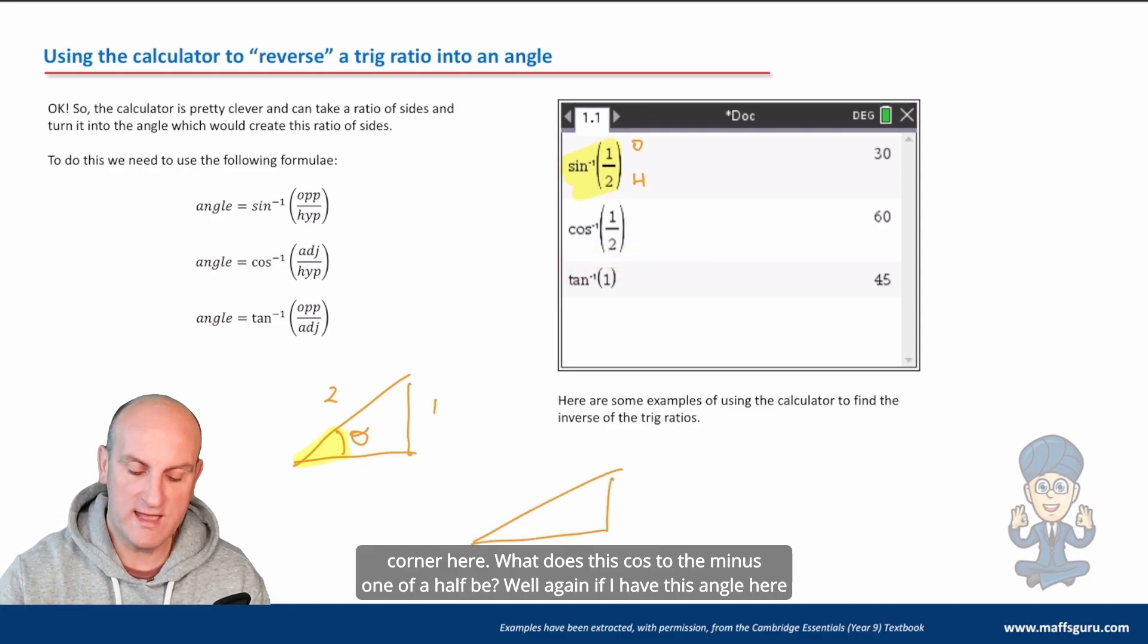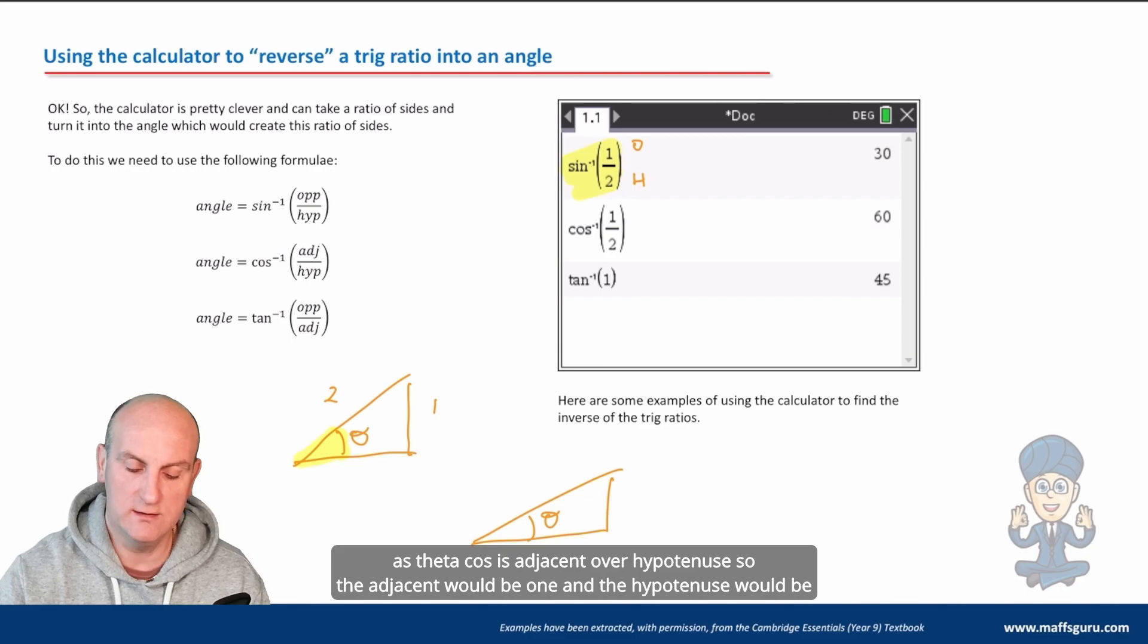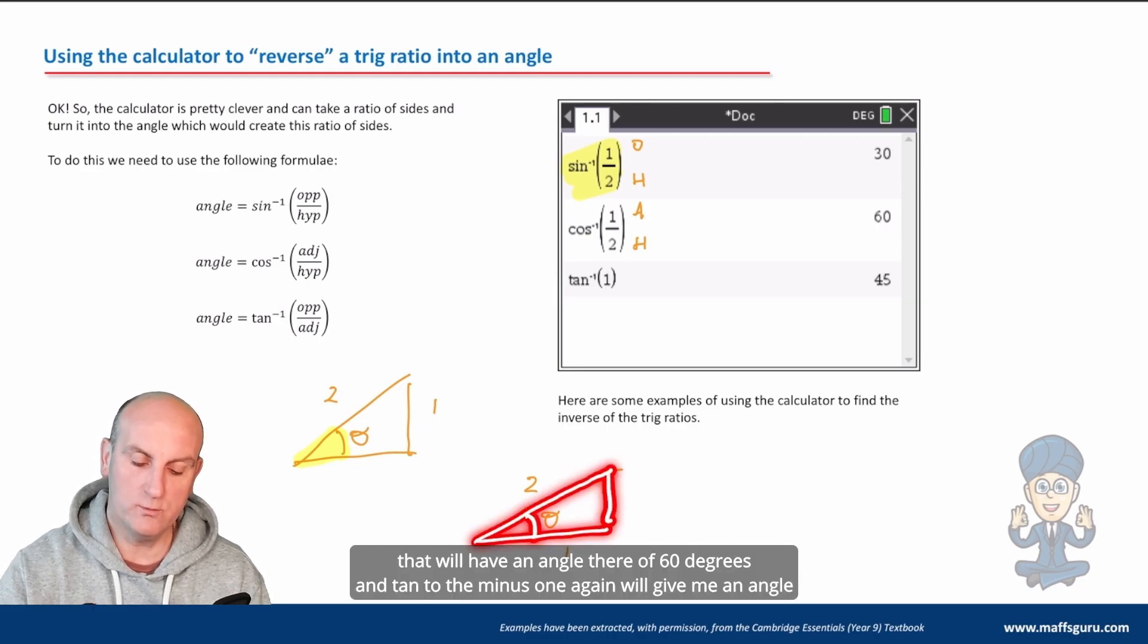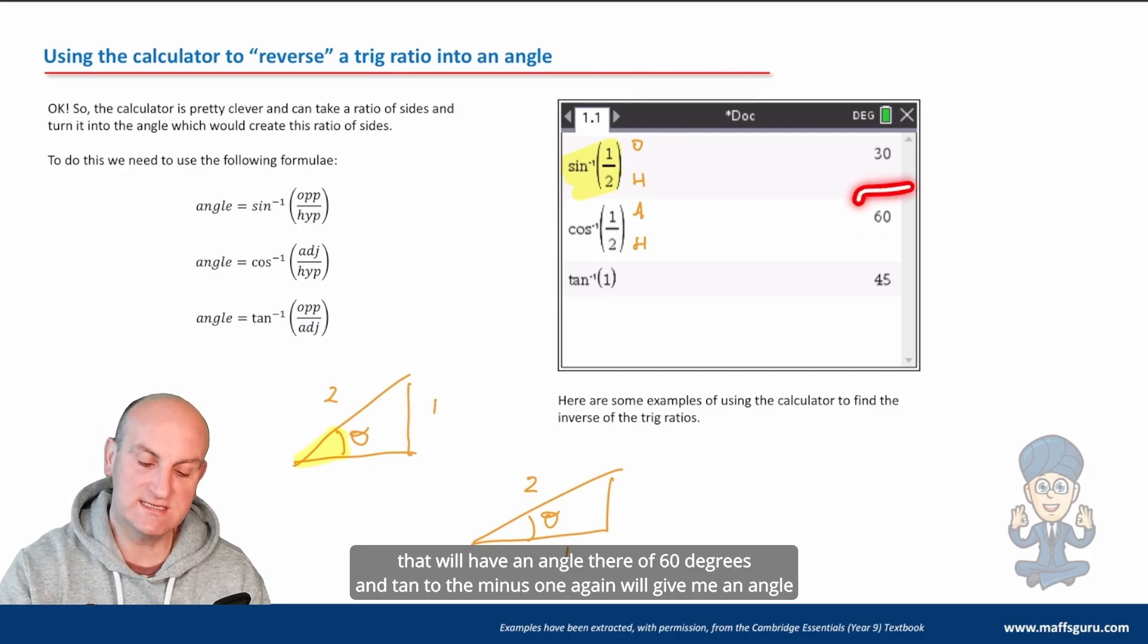if I have this angle here as theta, cos is adjacent over hypotenuse. So the adjacent would be one and the hypotenuse would be two. So in that situation, if I have a triangle where my adjacent is one and my hypotenuse is two, that will have an angle there of 60 degrees.